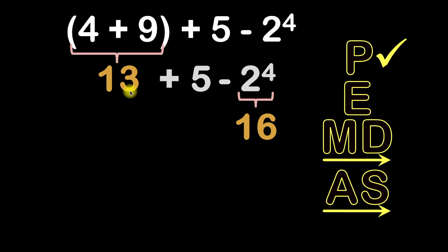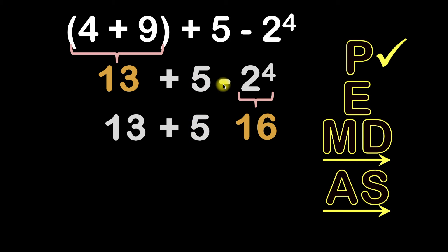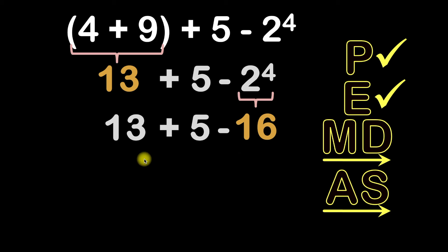Since we have no more exponents, we're done with step two. I'll bring down the 13, the plus sign, the 5, and the minus sign. Now we'll go to step three, which is multiplication or division from left to right. Do you see any multiplication or division to do here? Nope. So we're done with step three — we didn't even have to use it.